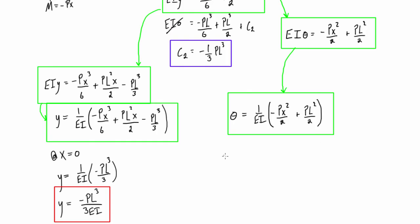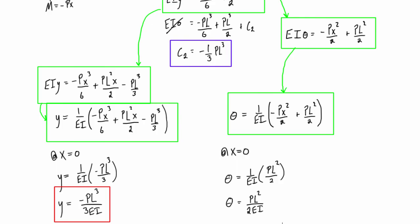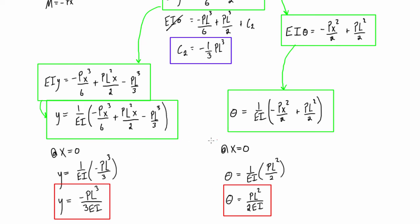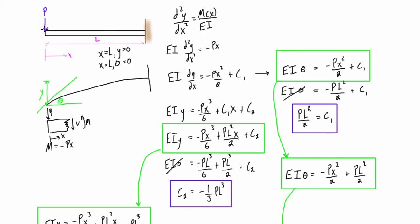For the slope at X equals 0: the PX² term goes to zero, leaving theta equals (1/EI) times PL²/2, so theta at X equals 0 is PL²/2EI. Again, you can give it in terms of P and L, or if given numerical values, compute the actual slope in radians. So we've found both the displacement and the slope at the end of this cantilever beam.